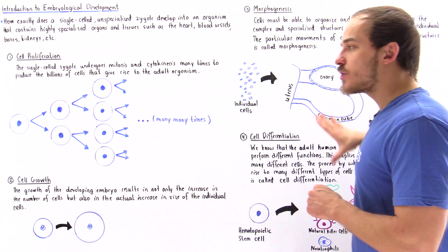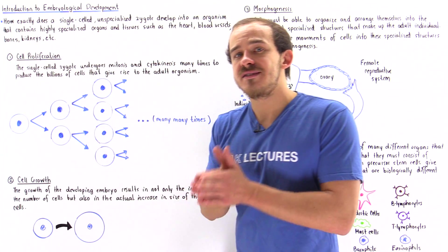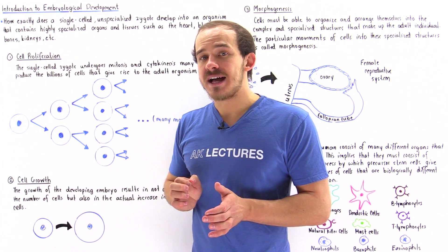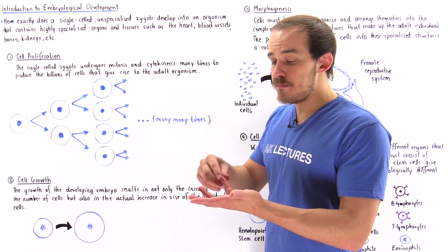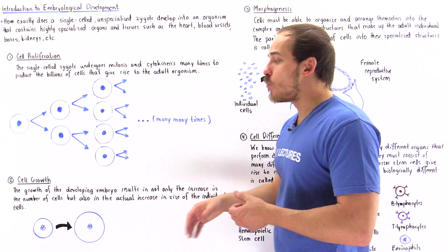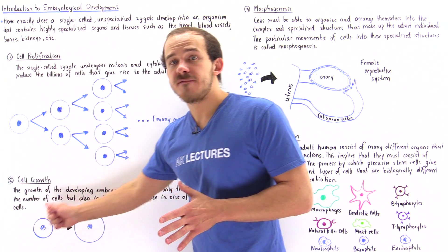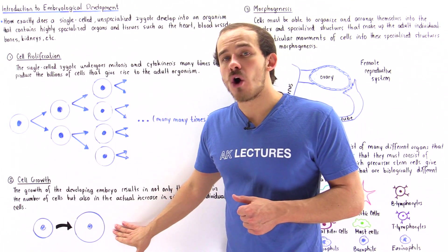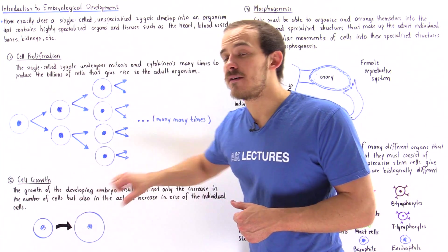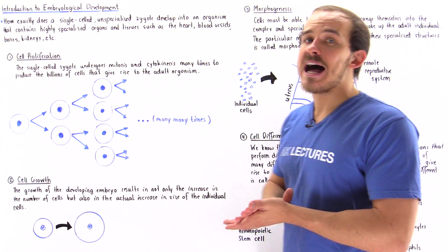We also have three other processes that take place alongside cell proliferation. Cell proliferation increases the number of cells, but cell growth actually increases the size of a cell. Any given cell could, for example, build more organelles, build a larger membrane, and develop more cytoplasm — and as a result, it will grow in size. So we have a smaller cell that eventually becomes a larger cell, giving us both an increase in cell number and an increase in cell size, since our body has cells of different sizes and types.